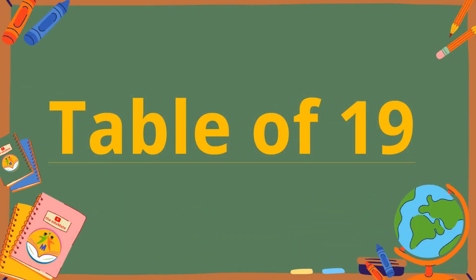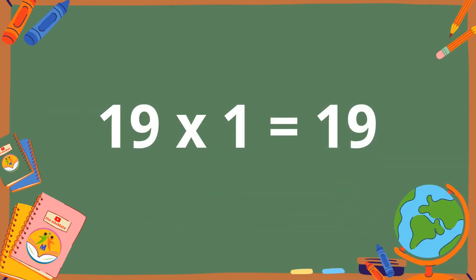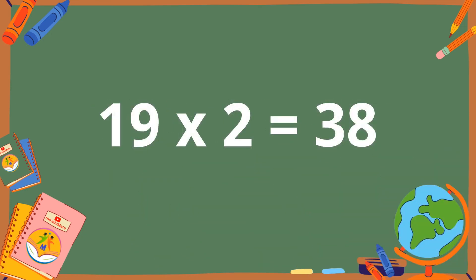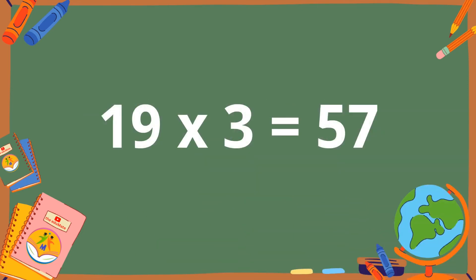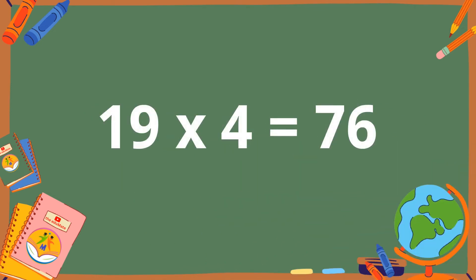Table of 19. 19 ones are 19. 19 twos are 38. 19 threes are 57. 19 fours are 76.